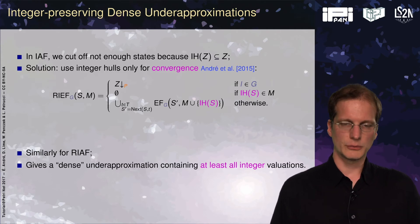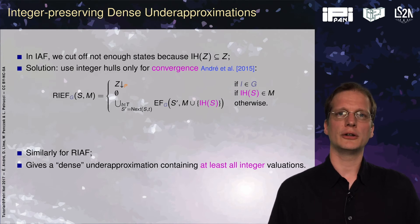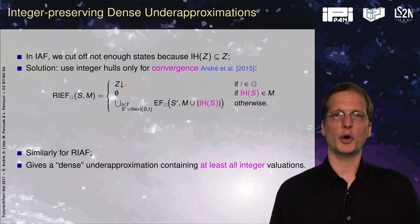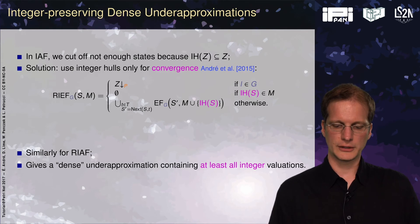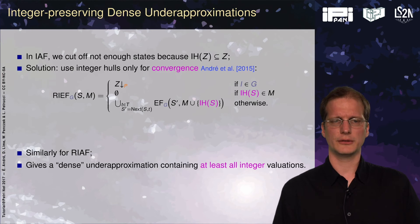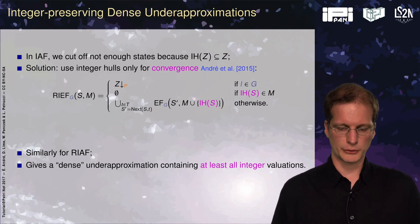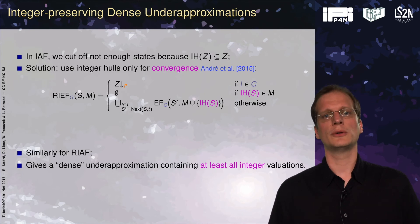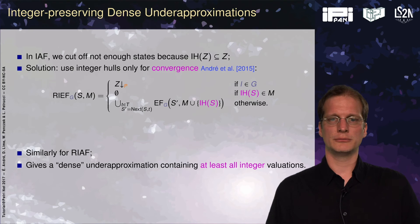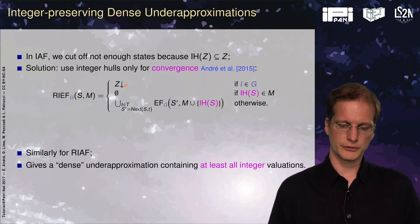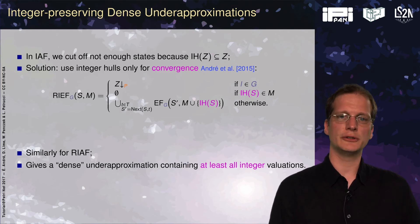To avoid this, instead of applying the integer hull to each successor directly, we compute successors as usual and only use the integer hull for convergence checking. What we store in our past list and check against is the integer hull. If we do that for both EF and AF, we get a new algorithm that gives a dense under-approximation containing at least all integer valuations. In practice, it is a bit slower because we compute the integer hull of a larger polyhedron each time.